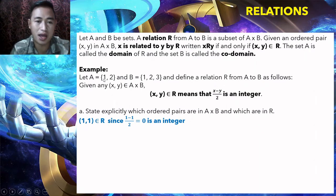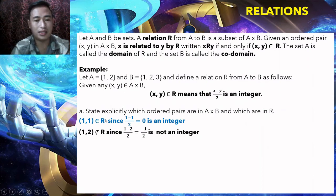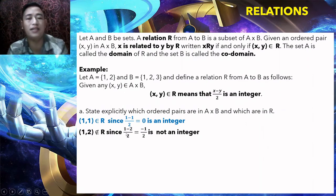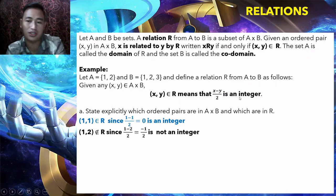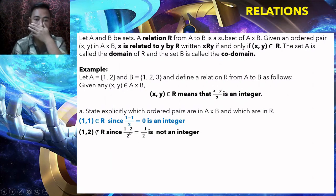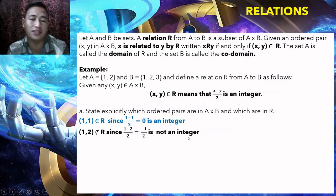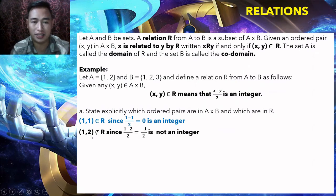Next pair, (1, 2): (1 − 2)/2 = −1/2, which is not an integer. So (1, 2) is not an element of R.